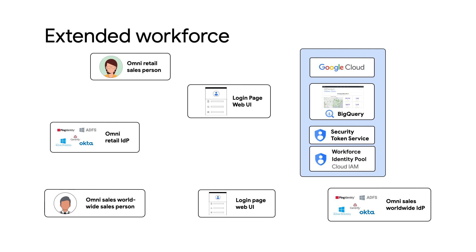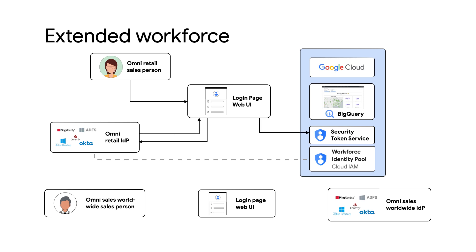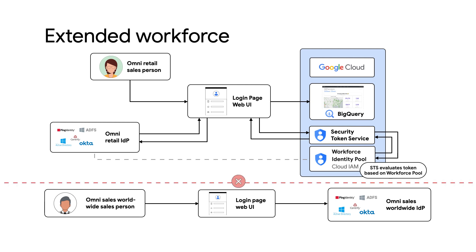Those stores were outsourced to a separate company called Omni Sales Worldwide, who used their own totally separate identity provider for authentication. Due to regulatory policies in certain locations, the Omni Sales Worldwide user accounts could not use the identity provider already in use. How did Omni Retail share their sales data with their affiliate-run stores?